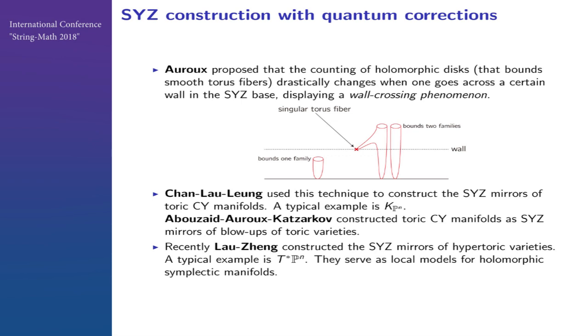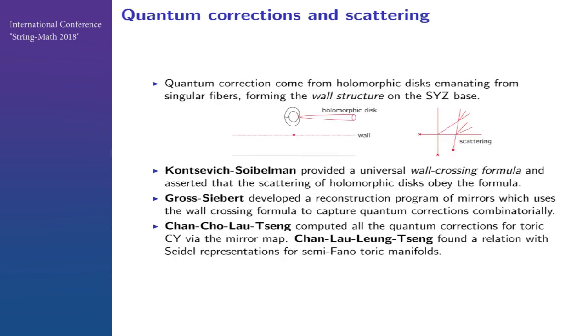Many people worked on how to get a quantum correction to the SYZ construction. Denef proposed a drastic change that goes across a certain wall in the base of the SYZ fibration. It was developed more by several groups to construct SYZ mirror. And then there's scattering and wall structure that all became very intricate and deeply developed. The universal wall-crossing formula and the scattering formula are beautiful developments. It grows a beautiful reconstruction program which uses the wall-crossing formula to capture these invariants.